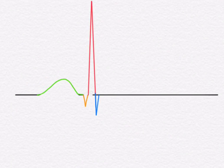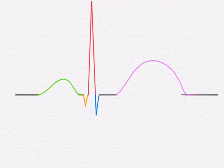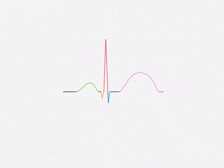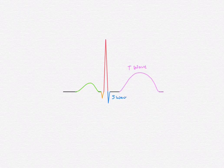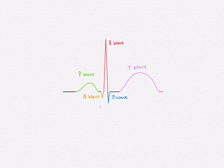The first thing we're going to do is look at what a normal heart rhythm looks like, and then we'll look at some common morphologies that may indicate the need for treatment. This will give you a better understanding of what's going on with patients in the field and what your ALS partners may or may not be ordering for intervention.